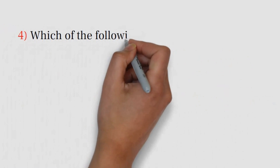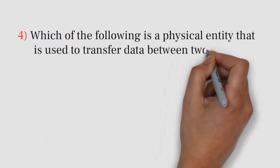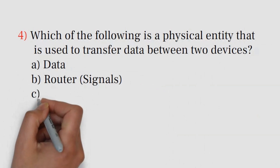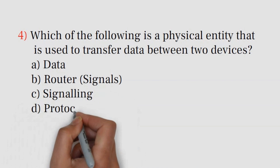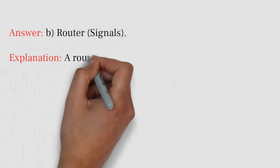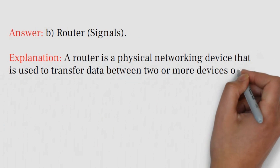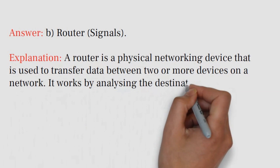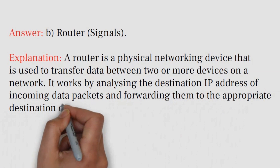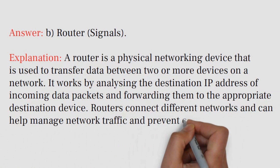Question number four: Which of the following is a physical entity that is used to transfer data between two devices? A) Data, B) Router/Signals, C) Signaling, D) Protocol. Answer: B) Router/Signals. Explanation: A router is a physical networking device used to transfer data between two or more devices on a network. It works by analyzing the destination IP address of incoming data packets and forwarding them to the appropriate destination. Routers connect different networks and help manage network traffic and prevent congestion.